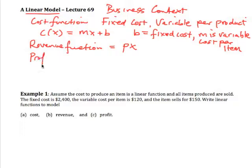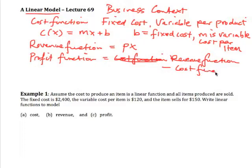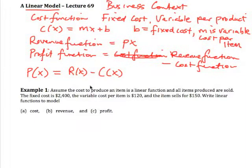The profit function, of course that's the objective of the business, is equal to the revenue function minus the cost function. So in other words, our profit function P(x) is going to be revenue function minus the cost function. And so that's how we determine the profit.